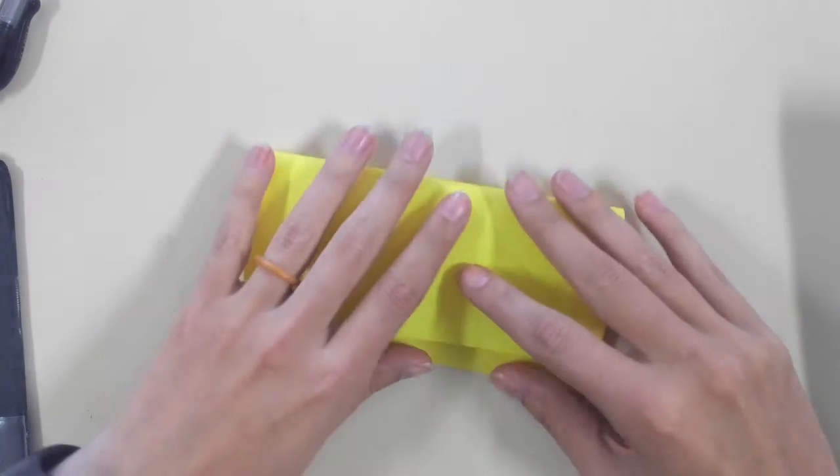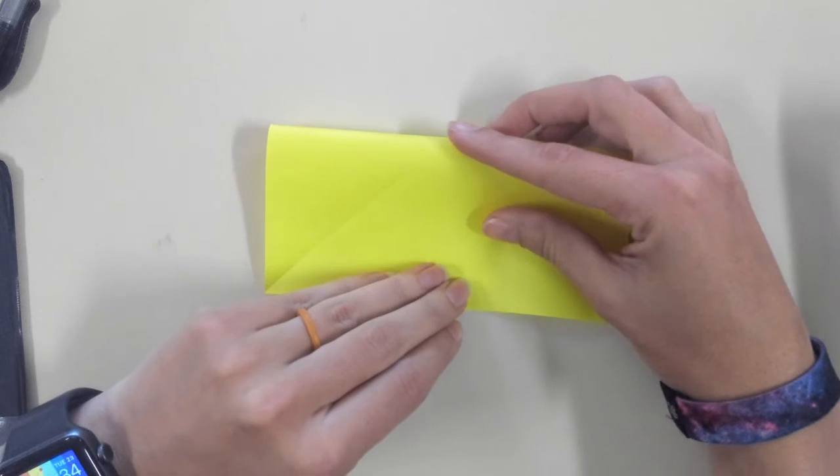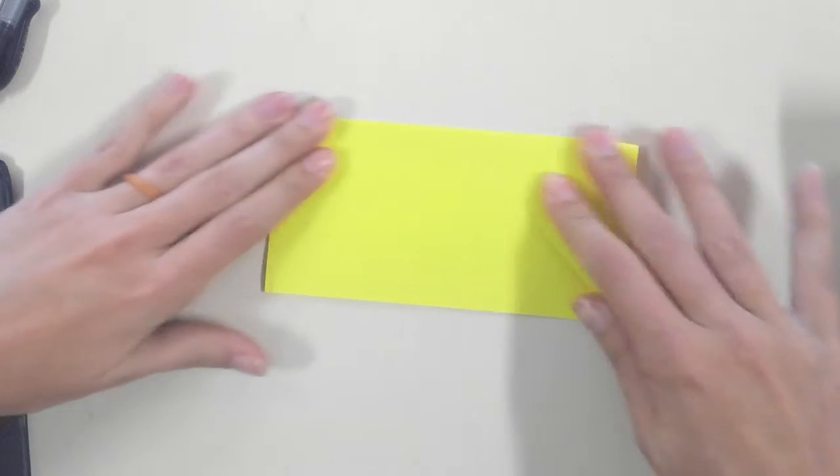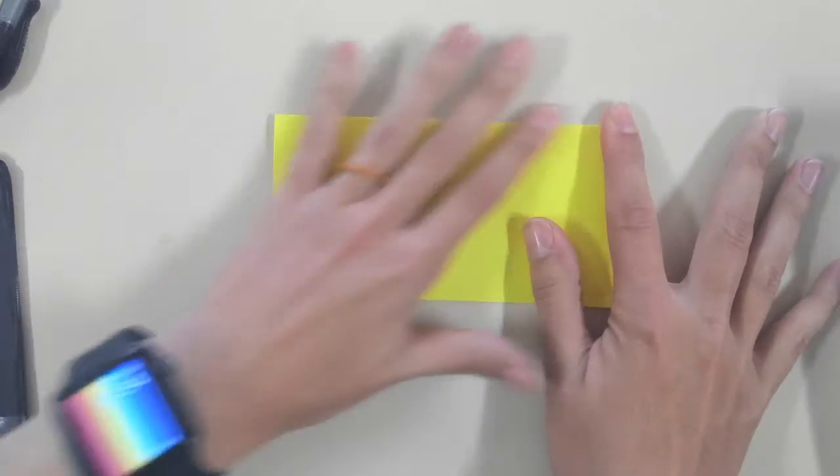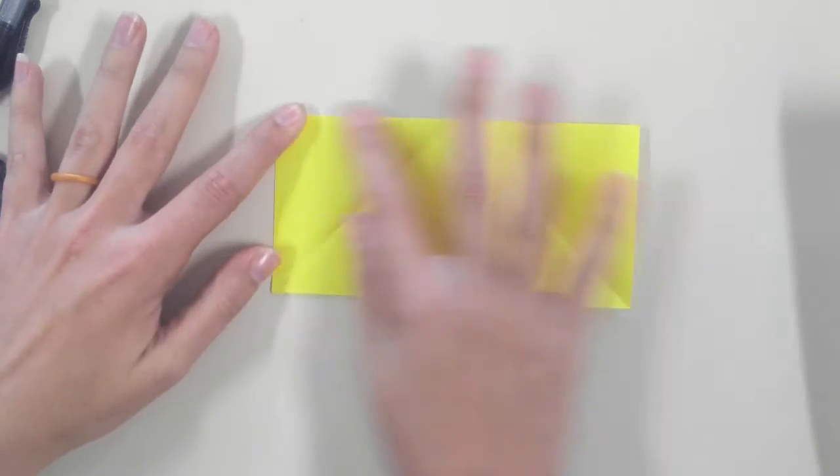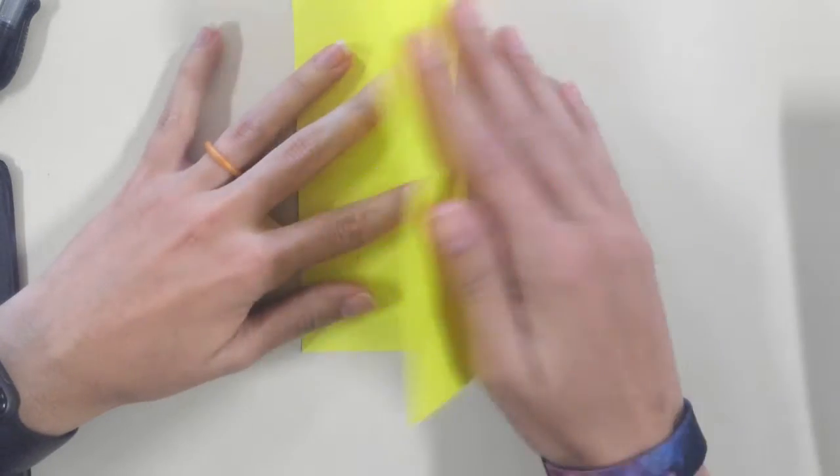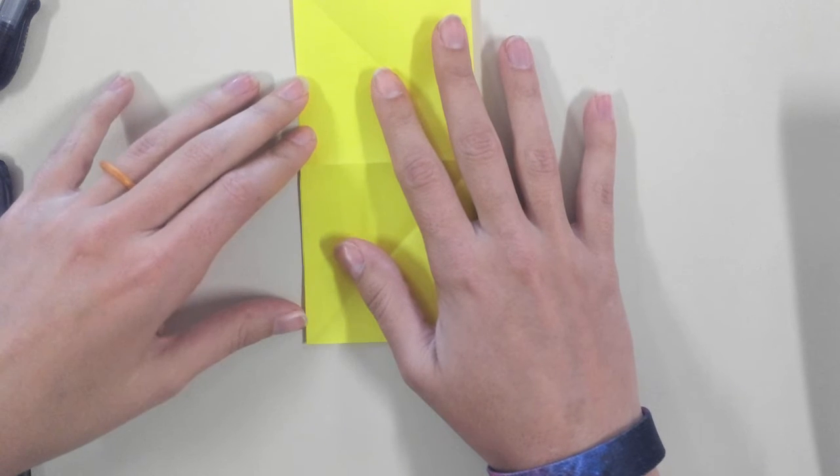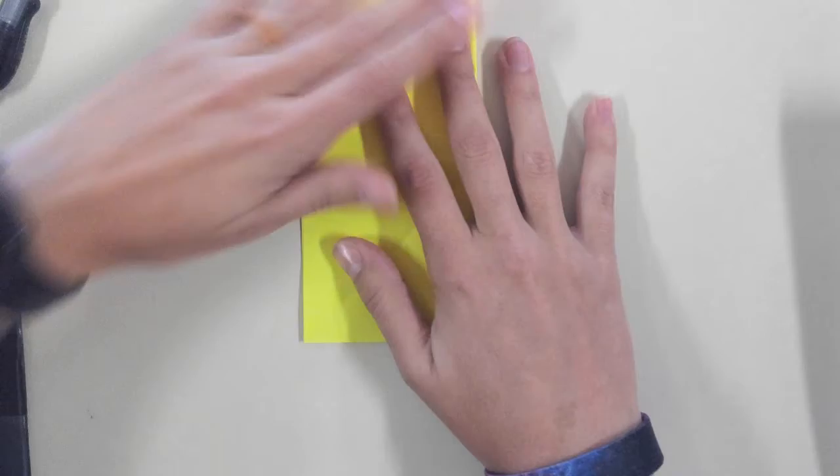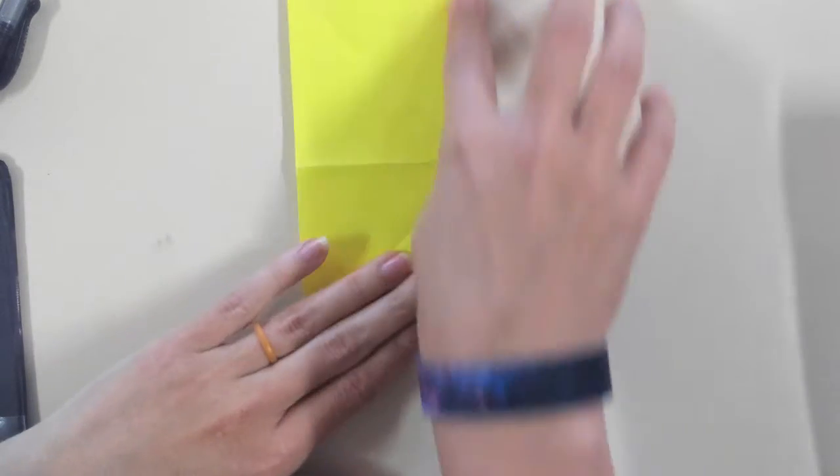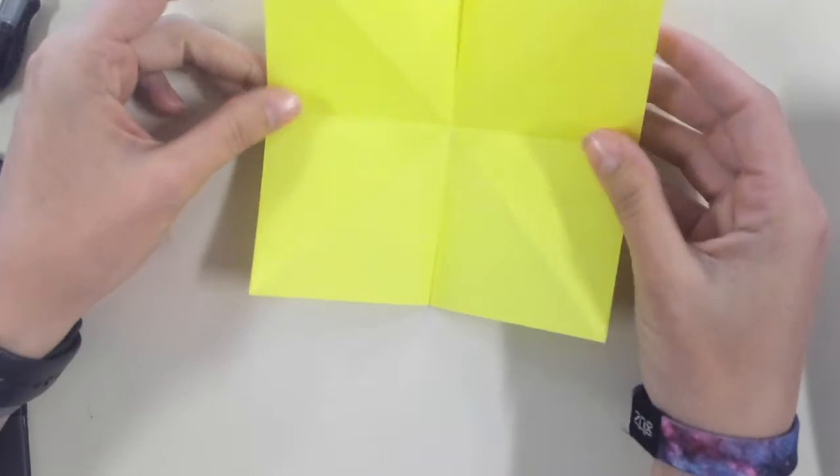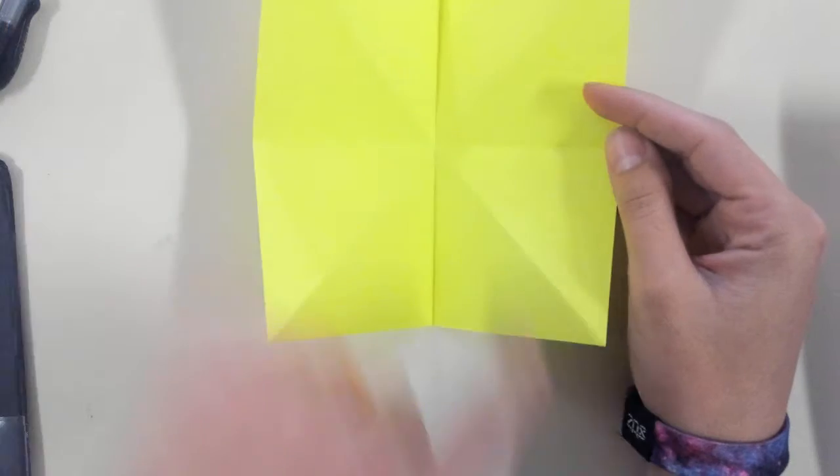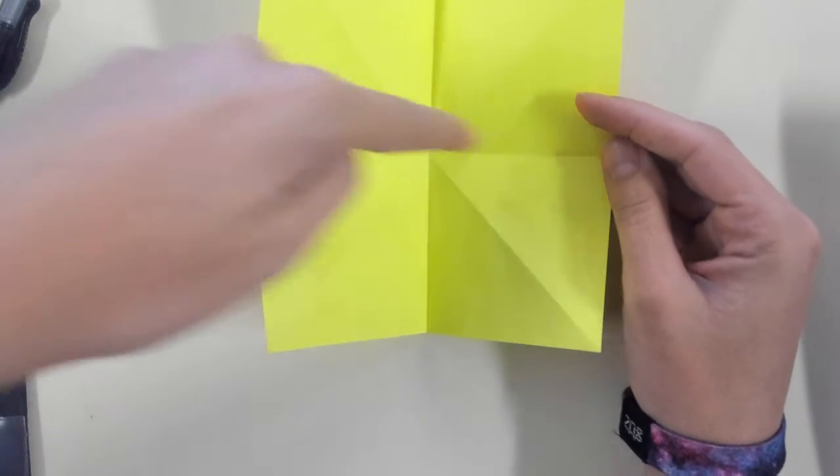And you're going to fold it in half, like hamburger width. You haven't messed up yet. And get those folds nice and crisp. So your paper should look like that. You've got an X and you've got a cross.